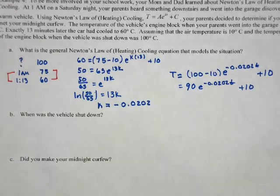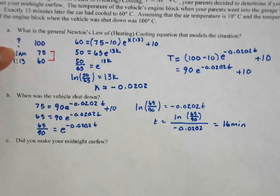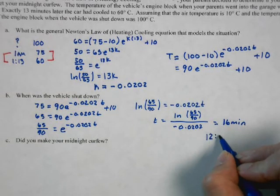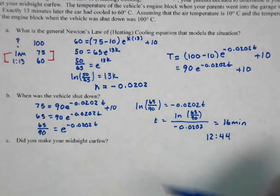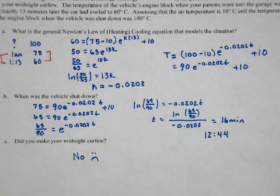Now use that equation to find when the engine was at 75 degrees — solving for how long it took to cool from 100 to 75. It took approximately 16 minutes. Since the temperature of 75 occurred at 1 a.m., the vehicle was shut down at 12:44 a.m. — 16 minutes before. So did you make your midnight curfew? Nope. That's a fun example of how exponential functions model real situations.